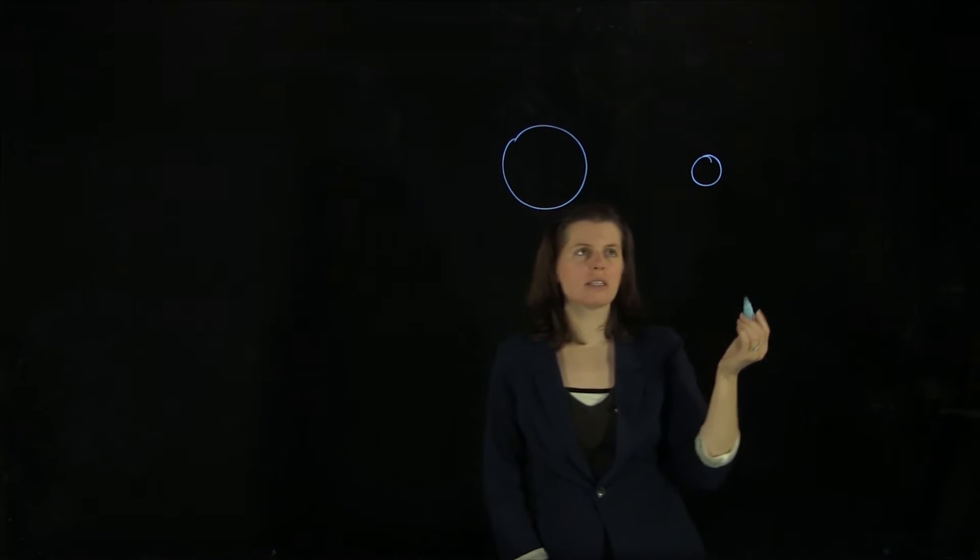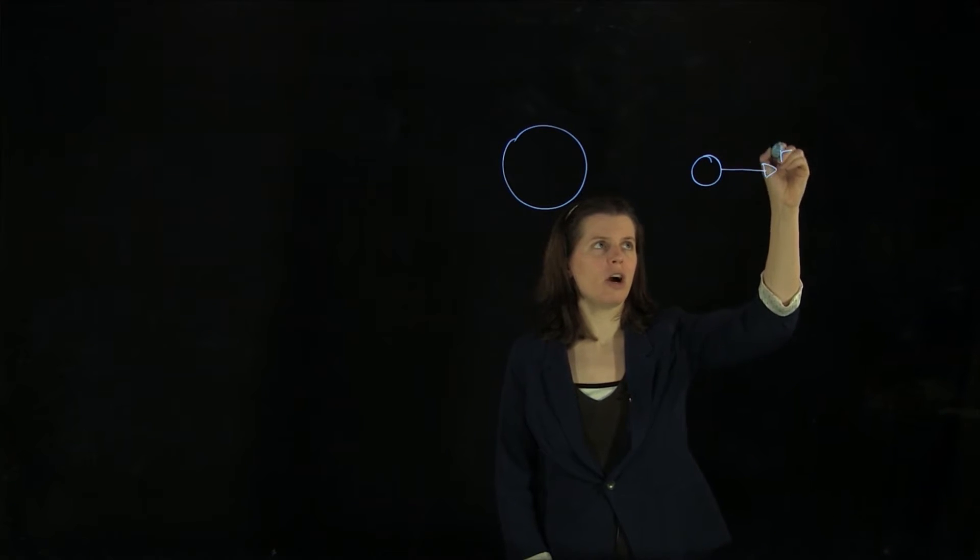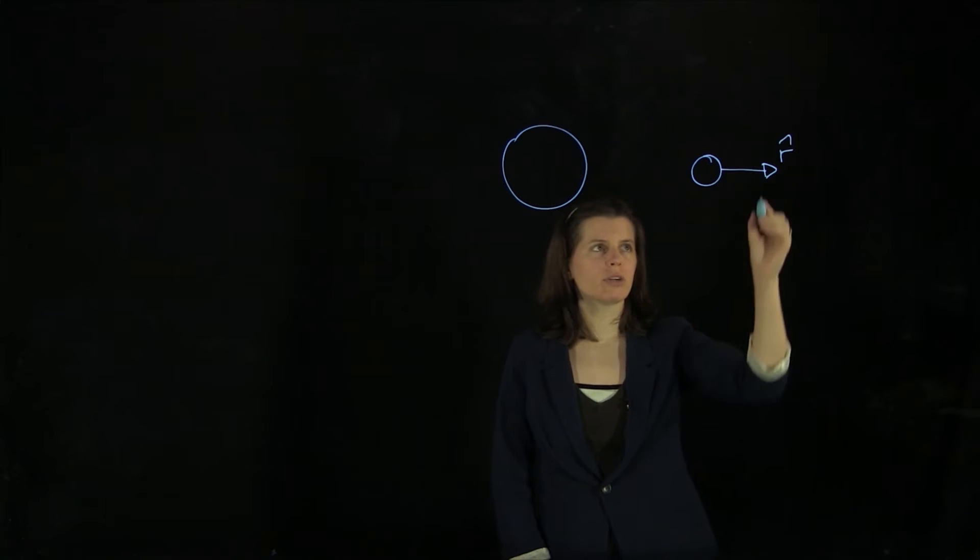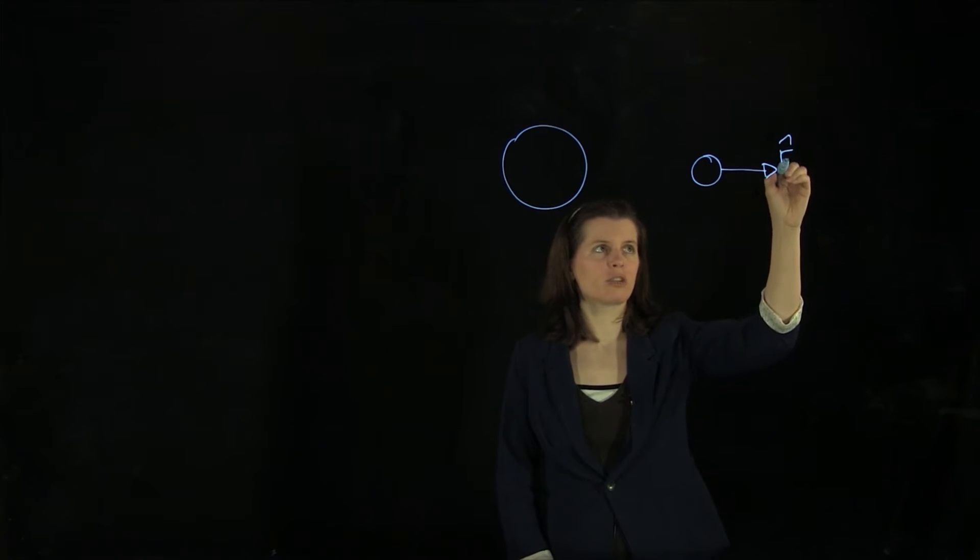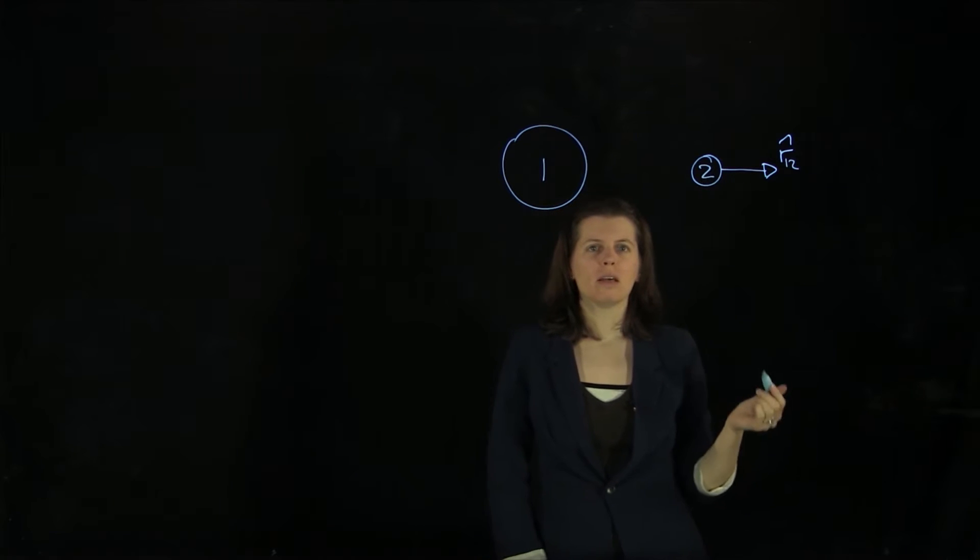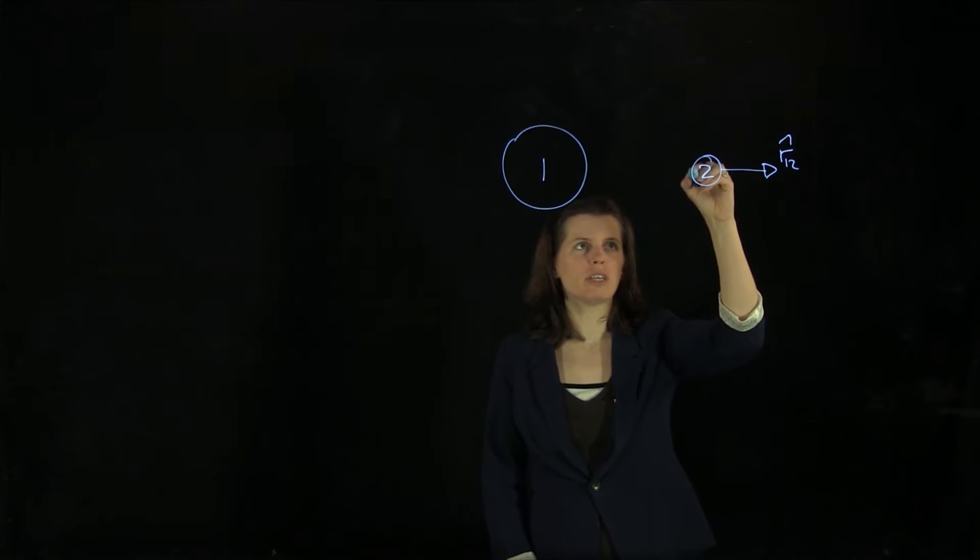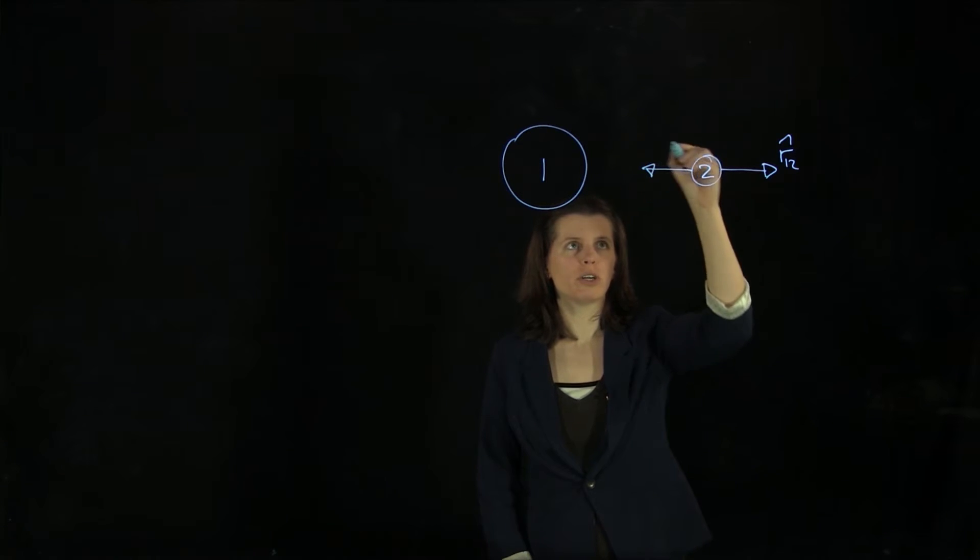So we can pick a coordinate system that goes radially. We're going to have an r-hat direction here between objects 1 and 2. What forces are acting on this little moon here? Well, it's the gravitational force going inward.